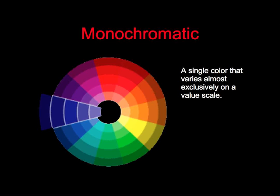Now compare that to a monochromatic color scheme. There will be color present, but 'mono' meaning one, and again we've got 'chroma' for color, so monochromatic is just a single color. It might be a single hue of blue and just different shades and tints of blue within that.